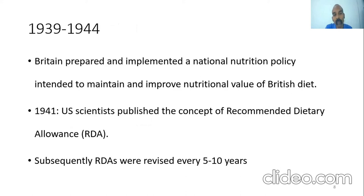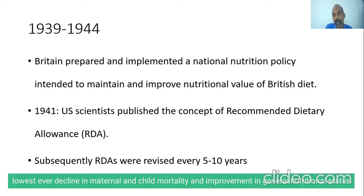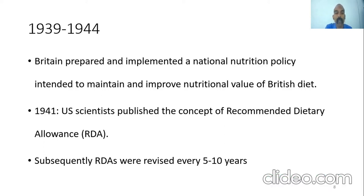Between 1939 and 1944, Britain prepared and implemented a national nutrition policy aimed at maintaining and improving the nutritional value of the British diet. This coincided with World War Two, and food restrictions enabled the British government to implement the policy fully. The result was the lowest rates of maternal and child mortality and considerable improvement in public nutritional condition. However, once the war ended, nutritional inequalities returned.